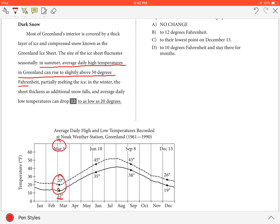...Fahrenheit, partially melting the ice. In the winter, the sheet thickens as additional snowfall, and average daily low temperatures can drop to as low as...